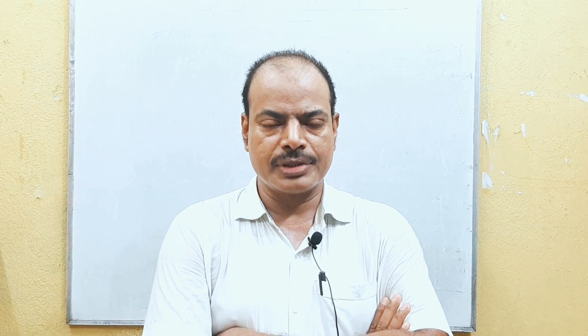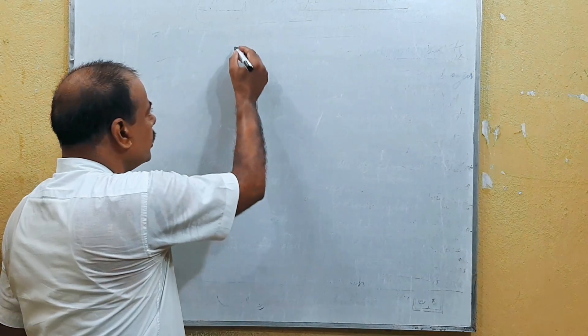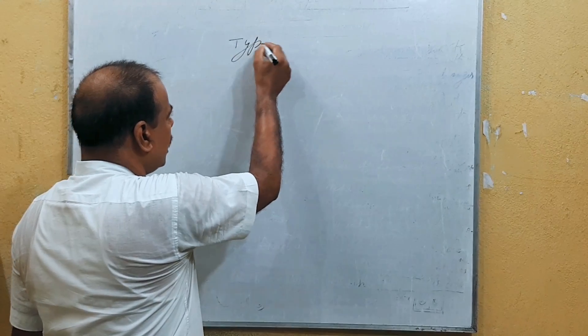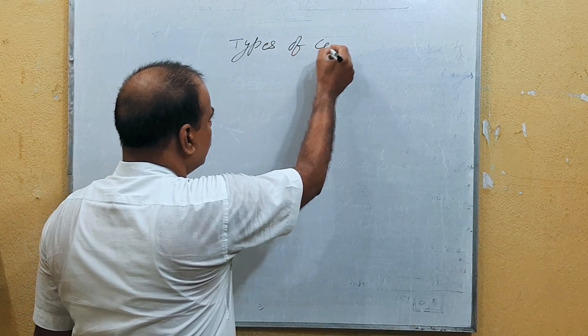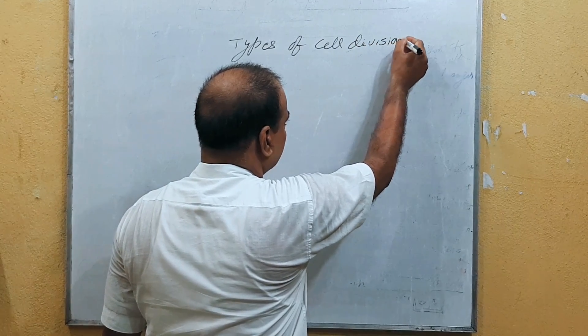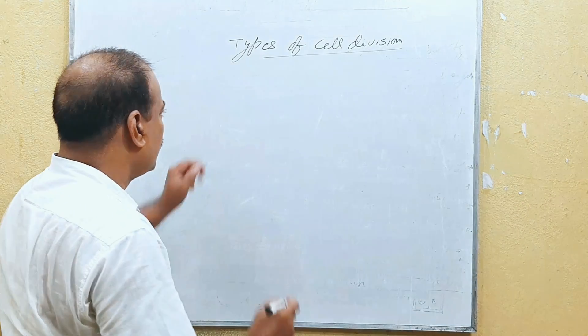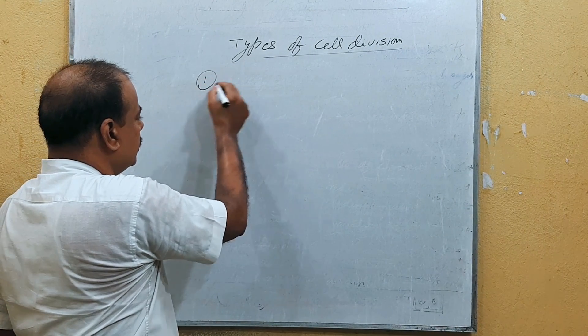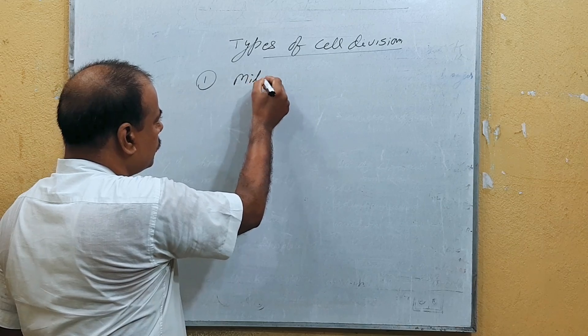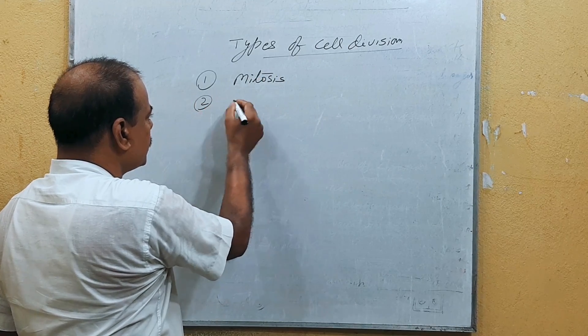In the last class, we discussed about mitosis cell division and phases of mitosis cell division. There are two different types of cell division: number one is mitosis, and number two is meiosis.